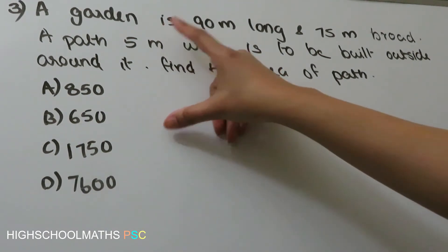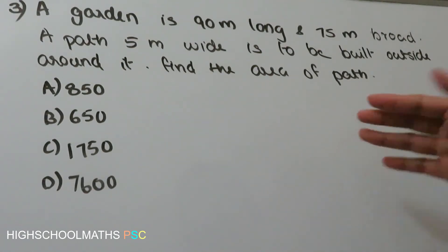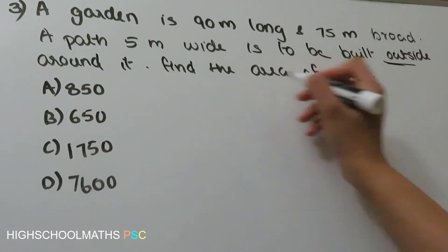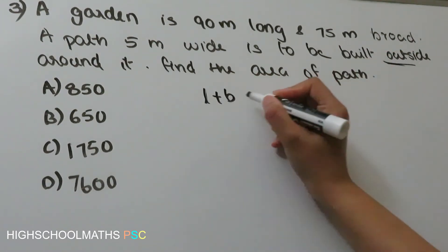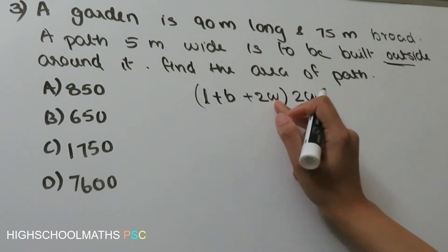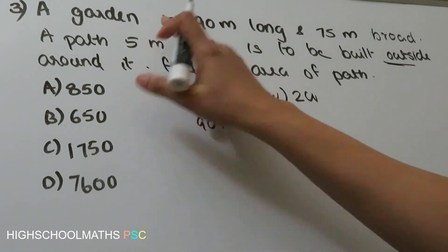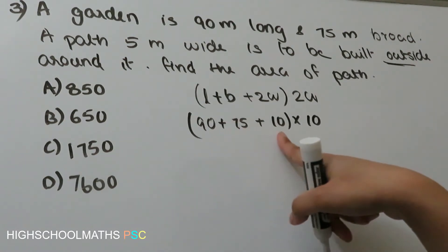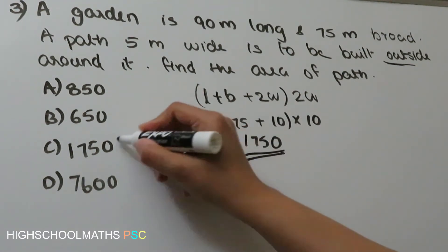The garden is 90m long and 75m wide, with a path 5m wide on the outside. The equation for the outside path is L plus B plus 2W, into 2W. Here L is 90, B is 75, and 2W is 10. The calculation gives 100 plus 75 into 10, so Option C is the answer.